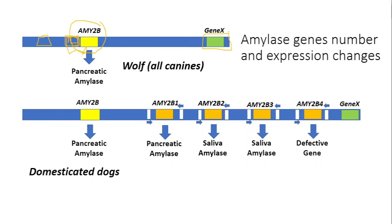Downstream from the amylase gene there's another gene — we'll call it gene X — which is just the next gene in the genome on the chromosome. Now, domesticated dogs came from wolves and are canines, but all canines only have one copy of their amylase gene. When we sequence different domesticated dogs, we realize some have only about two copies of this gene, but many have a lot more. Where did those copies come from? It has to have been mutations — something happened such that they copied the code for this enzyme, making multiple copies of this particular gene.